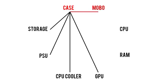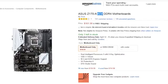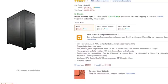So for starters, the relationship between cases and motherboards is pretty simple. Motherboards come in a number of sizes or form factors, but the most common ones from smallest to largest are Mini-ITX, Micro-ATX, ATX, and Extended-ATX, or E-ATX for short. Once you know what kind of board you're dealing with, you can look on a case's product page to see what types of boards it supports.